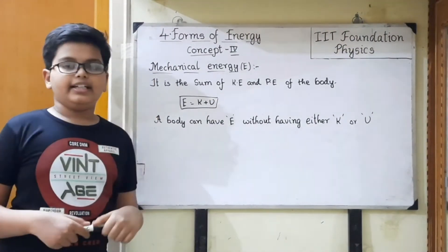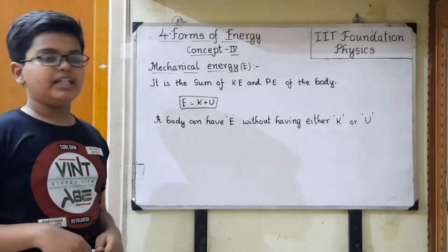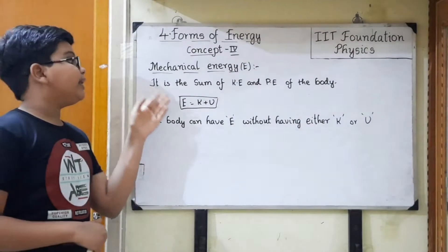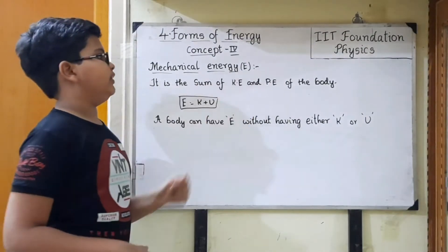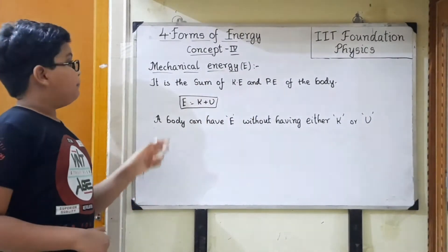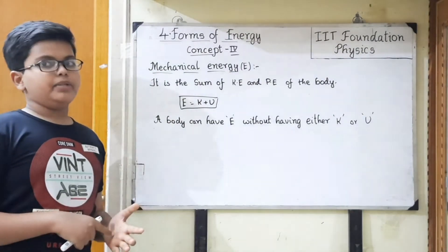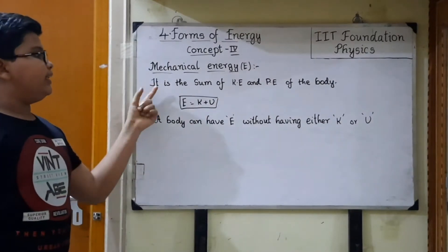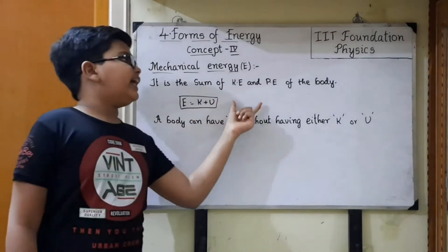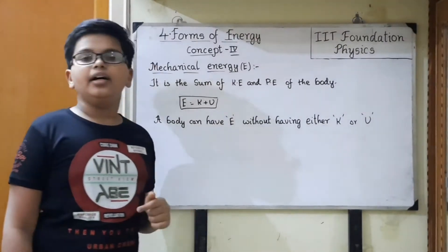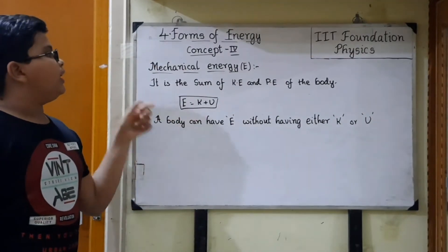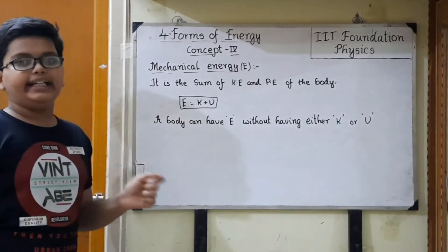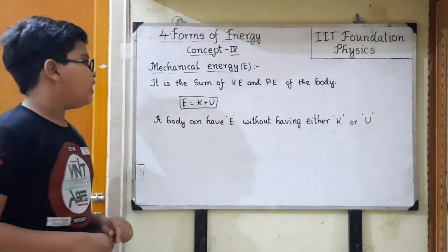Next, mechanical energy. Mechanical energy is denoted with capital E. It is nothing but the sum of the kinetic energy and potential energy of the body. Its formula is E equals K plus U, where E is the mechanical energy, K is the kinetic energy, and U is the potential energy.